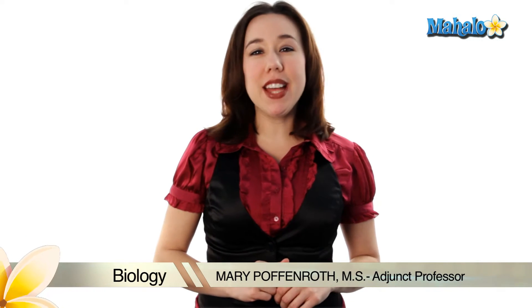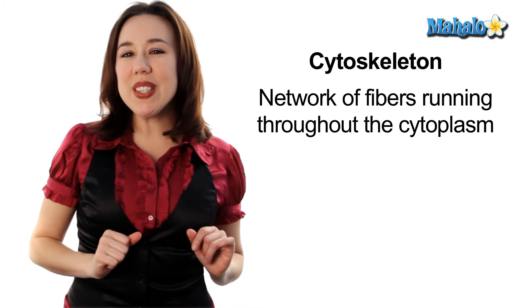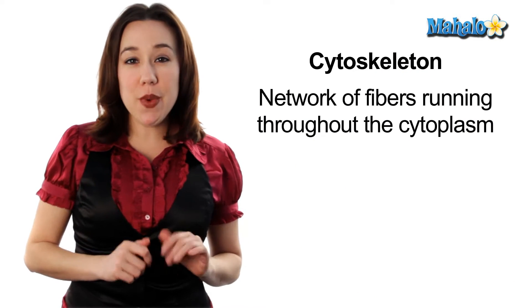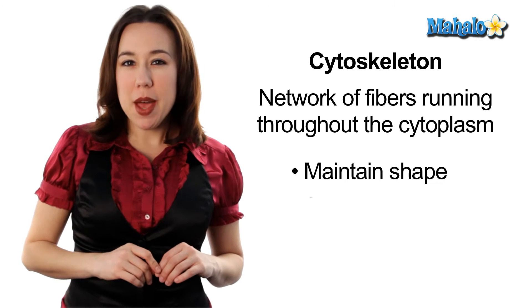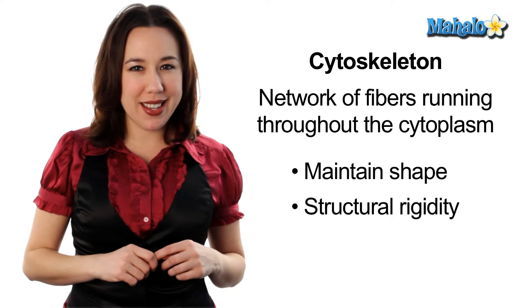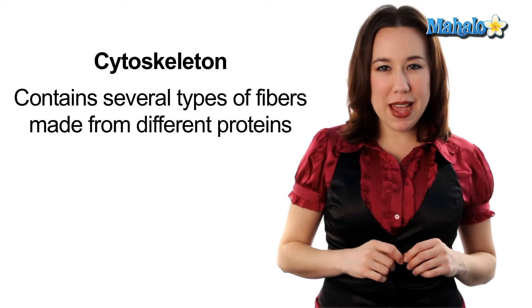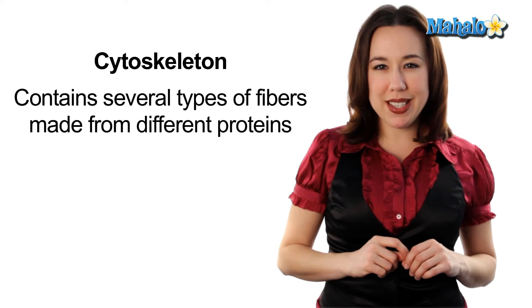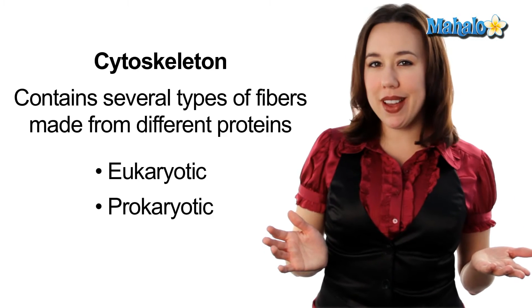Hi, my name is Mary Poffenroth. I'm an adjunct professor of biology and today we're going to talk about the cytoskeleton. The cytoskeleton is a network of fibers running throughout the cytoplasm and it helps the cell by maintaining its shape and giving it some structural rigidity. The cytoskeleton contains several types of fibers made from different types of proteins and is found in both eukaryotic and prokaryotic cells.